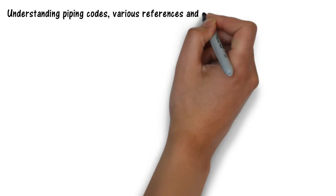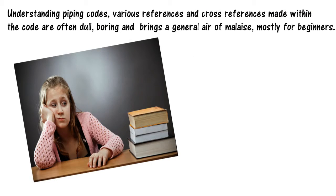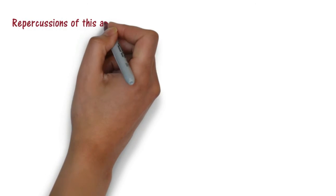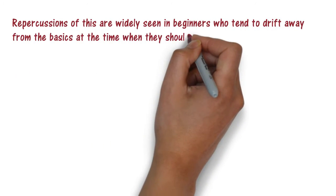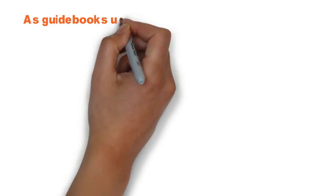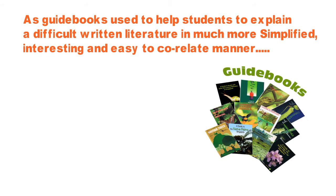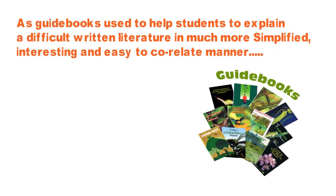Understanding piping codes, various references and cross-references made within the codes are often dull, boring and bring a general air of malaise, mostly for beginners. Repercussions of this are widely seen in beginners who tend to drift away from the basics at the time when they should be actually mastering the concepts, thus creating a void in the later part of their career. Guidebooks used to help students explain difficult written literature in a much more simplified, interesting and easy to correlate manner. Similarly...